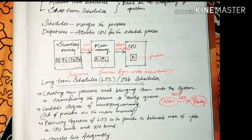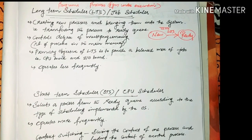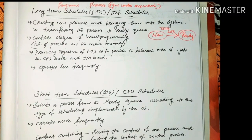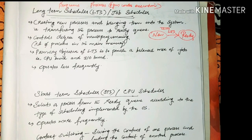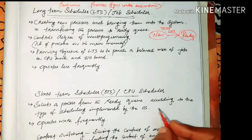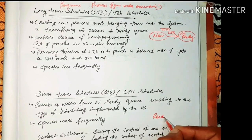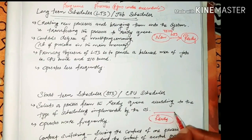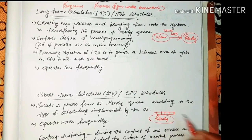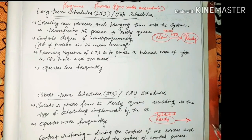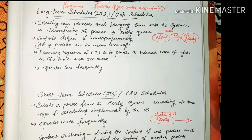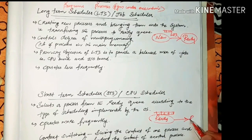The short-term scheduler, also called the CPU scheduler, selects a process from the ready queue according to the type of scheduling algorithm implemented by the OS. The ready queue contains processes such as P1, P2, P3. A scheduling algorithm is used to decide which process is ready to run.